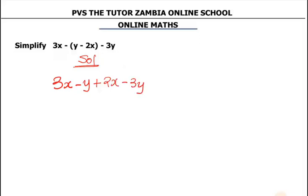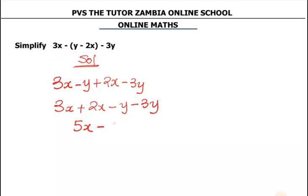Now once you reach this stage, what you have to do is collect the like terms. Our like terms here are 3x and 2x because they have x in them, and negative y and negative 3y. Same signs — you add: 3 plus 2 gives 5x. Negative y and negative 3y are same signs, you add and maintain the sign: minus 4y. So our final answer is 5x minus 4y.